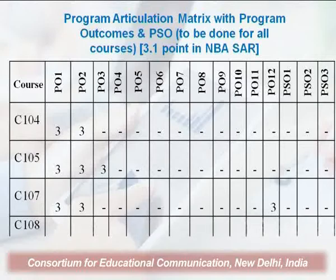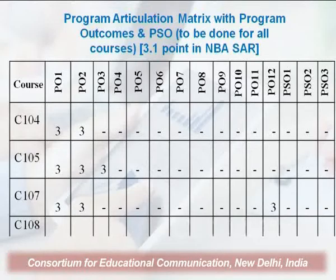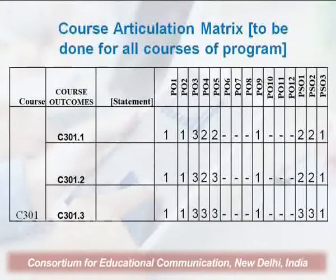On this particular slide, C104 mapped with PO1 is mentioned as 3 — that is the high level of attainment. Whatever is mentioned on this slide shows 3, meaning a higher level of attainment is present.